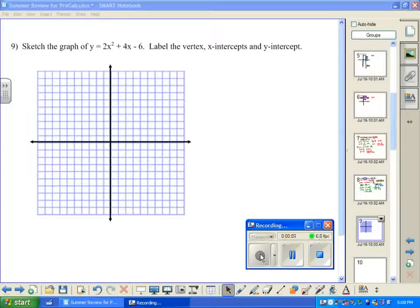For this problem, we're asked to sketch the graph of the parabola, and the parabola is given to us in standard form, y equals ax squared plus bx plus c. We need to identify the vertex, the x-intercepts, and the y-intercept.